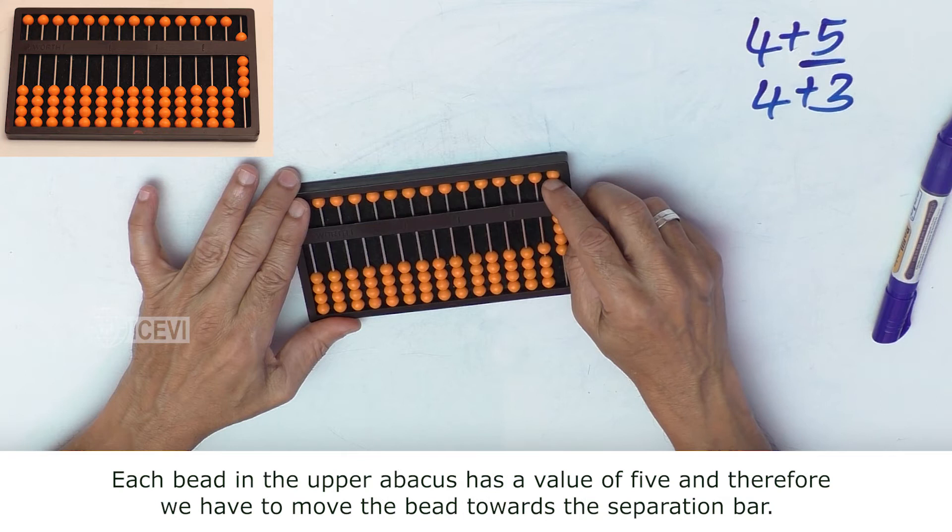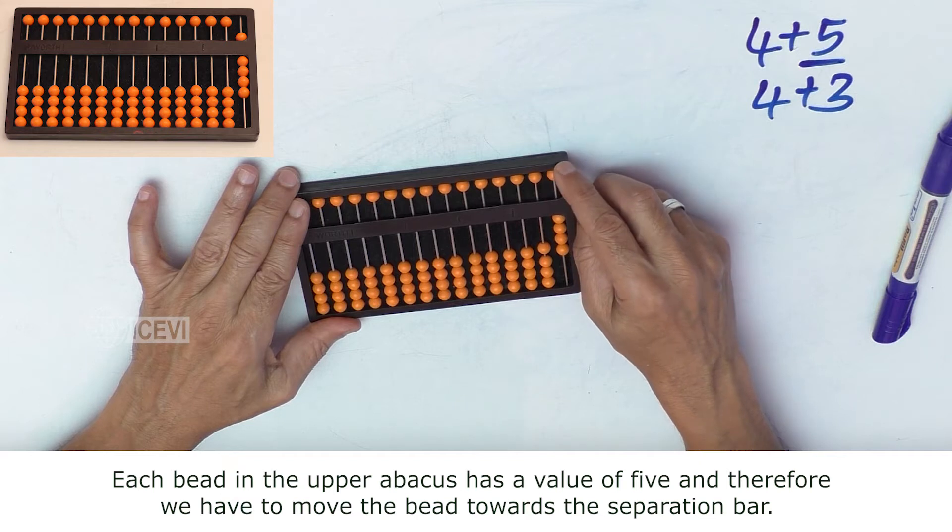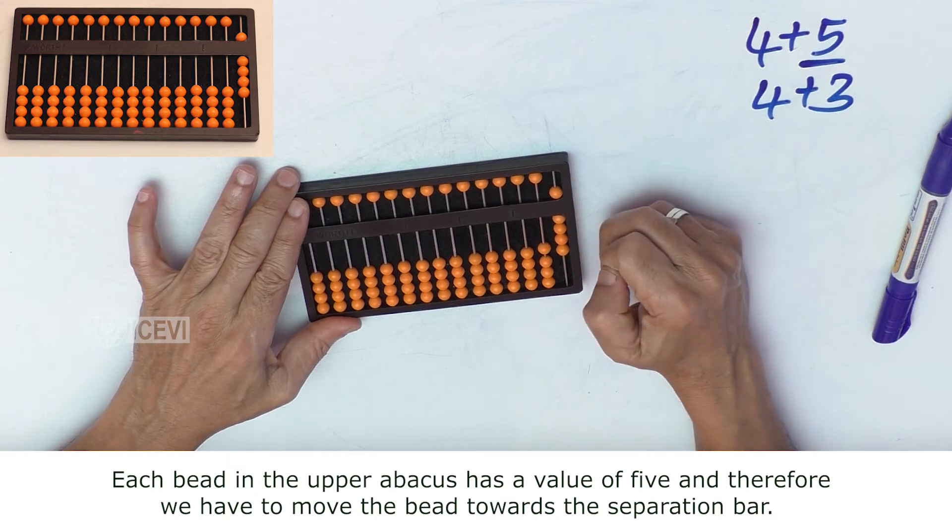Each bead in the upper abacus has a value of 5, and therefore we have to move the bead towards the separation bar.